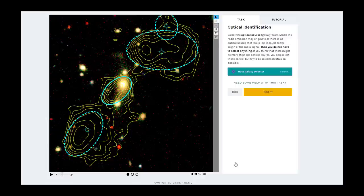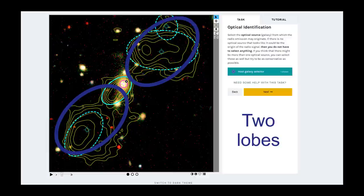The second task of this classification is optical identification. This means that we will be trying to find a galaxy in the optical image from which the radio emission, the yellow contour lines, might originate. This galaxy contains a supermassive black hole that is producing the yellow contour lines. In order to do this, click on Host Galaxy Selector and then click on the galaxy that you believe the radio emission is coming from. Note how in this example image, the host galaxy is located in the middle of the two radio lobes. This will often be the case.